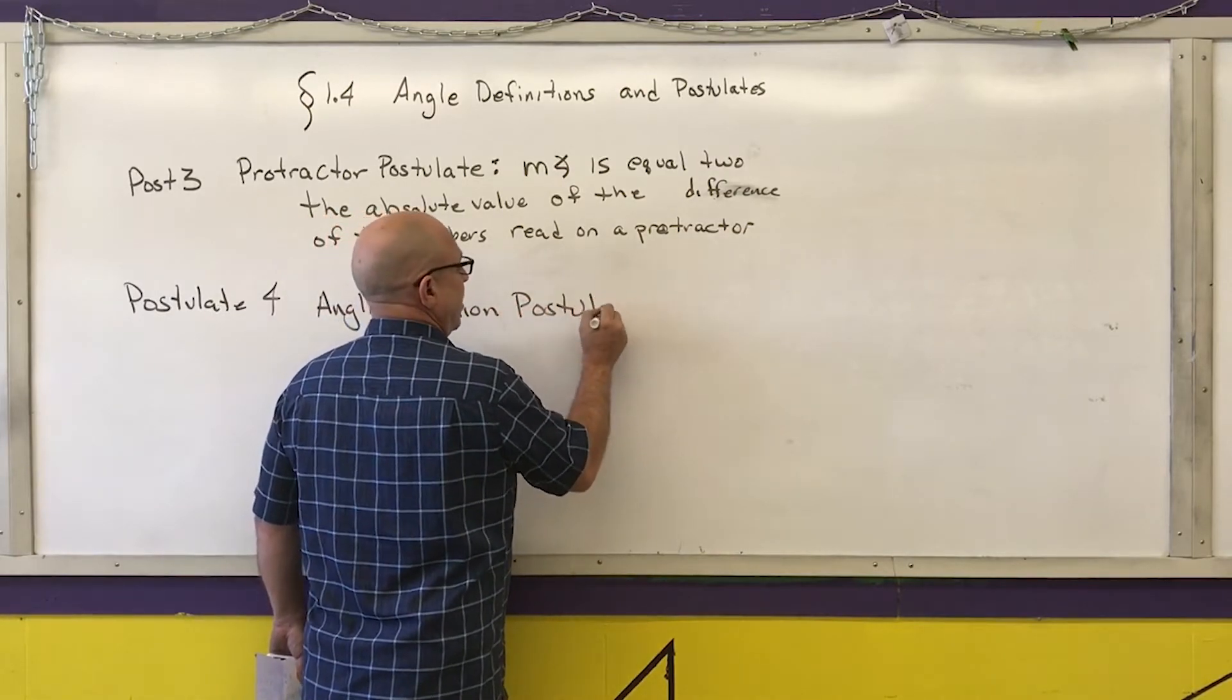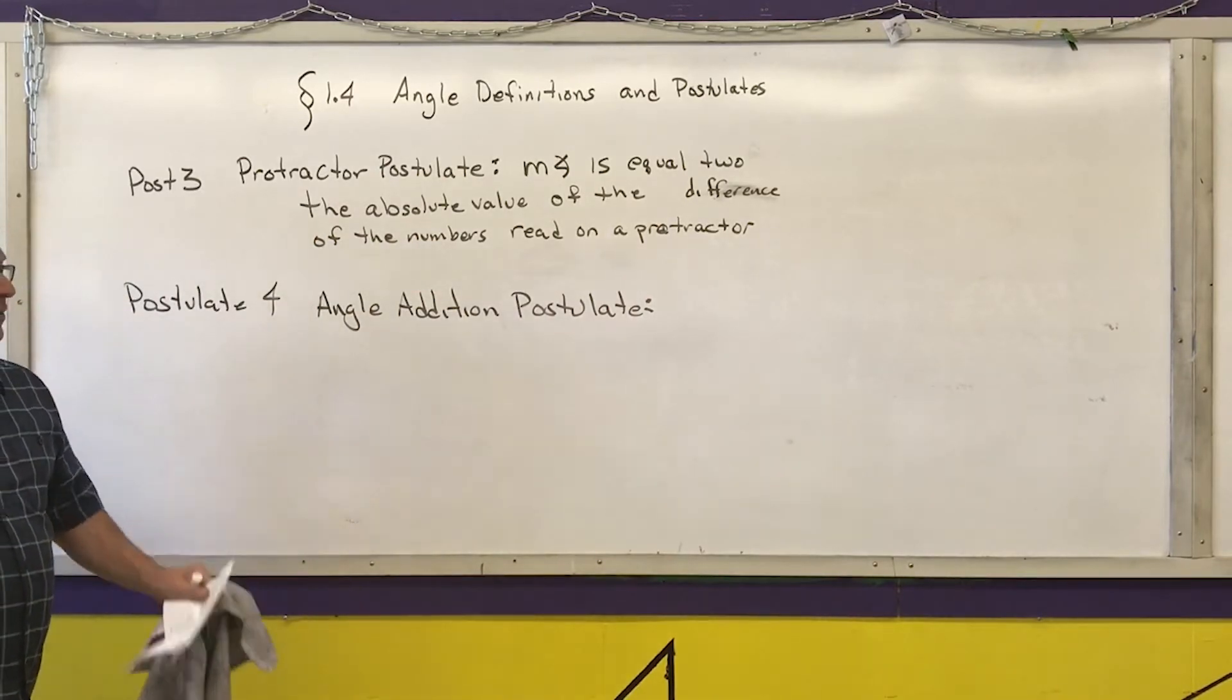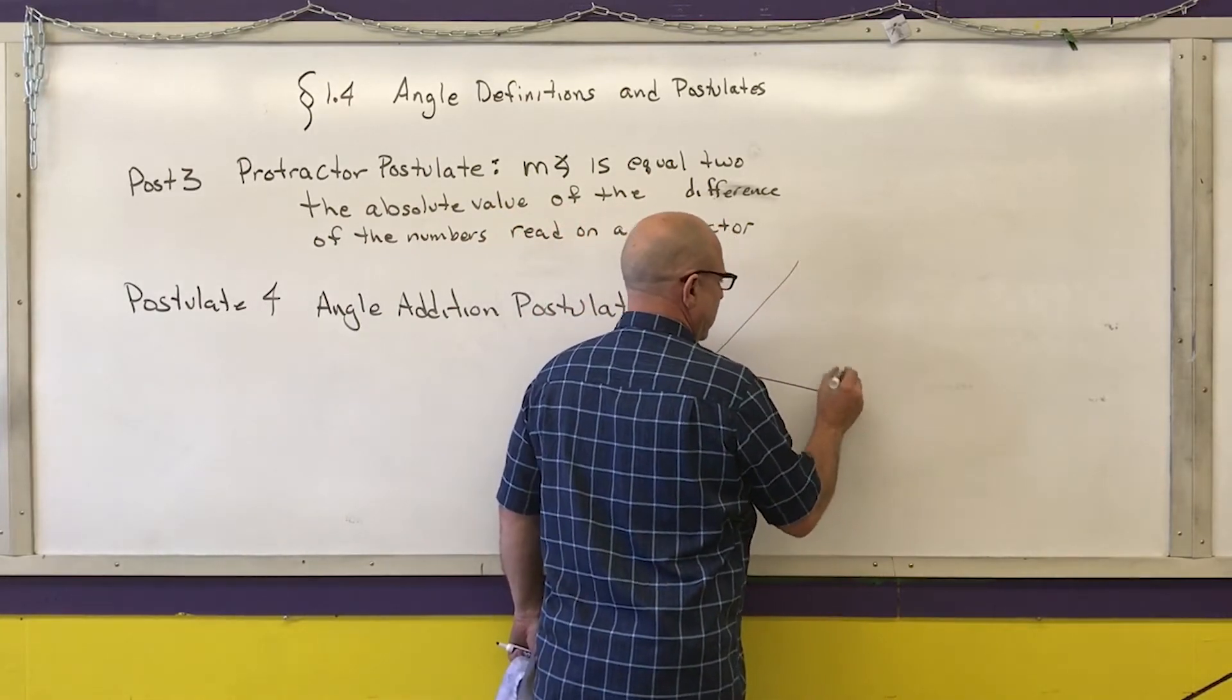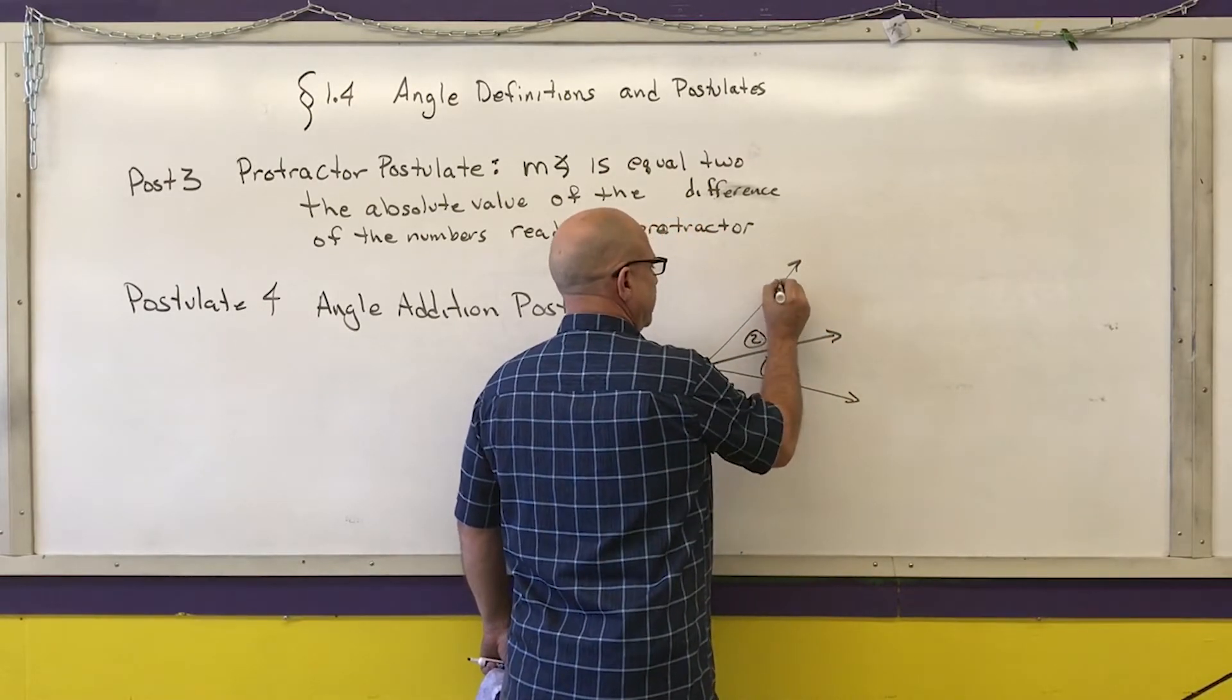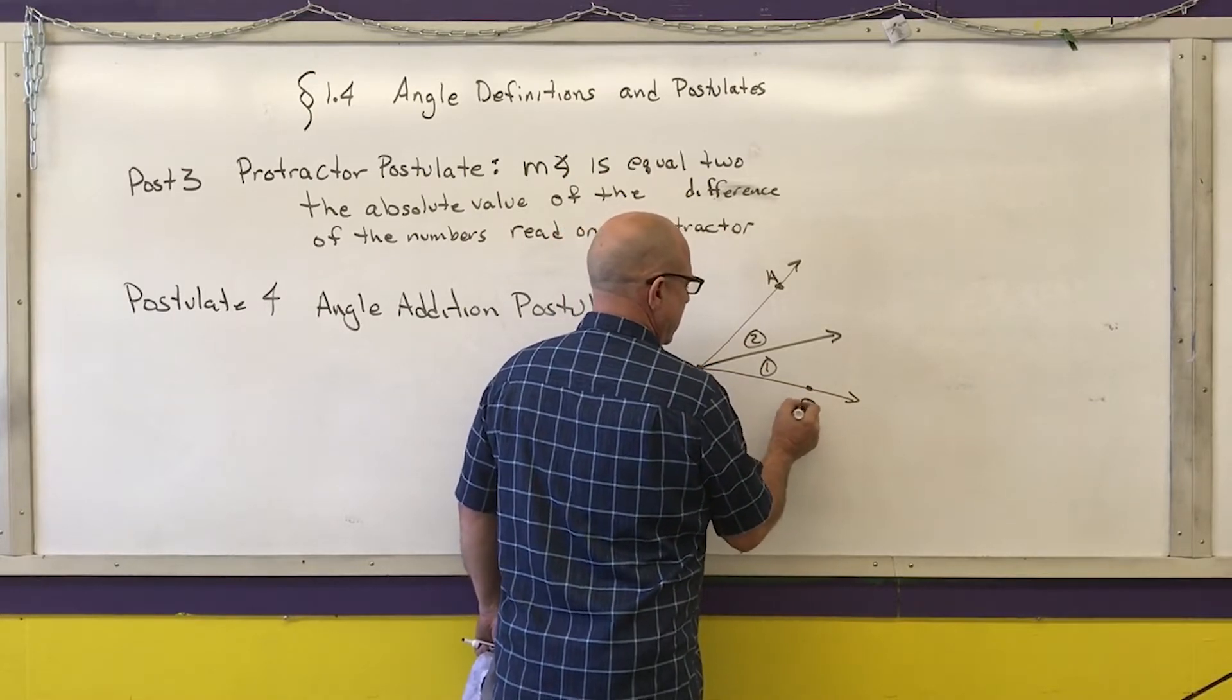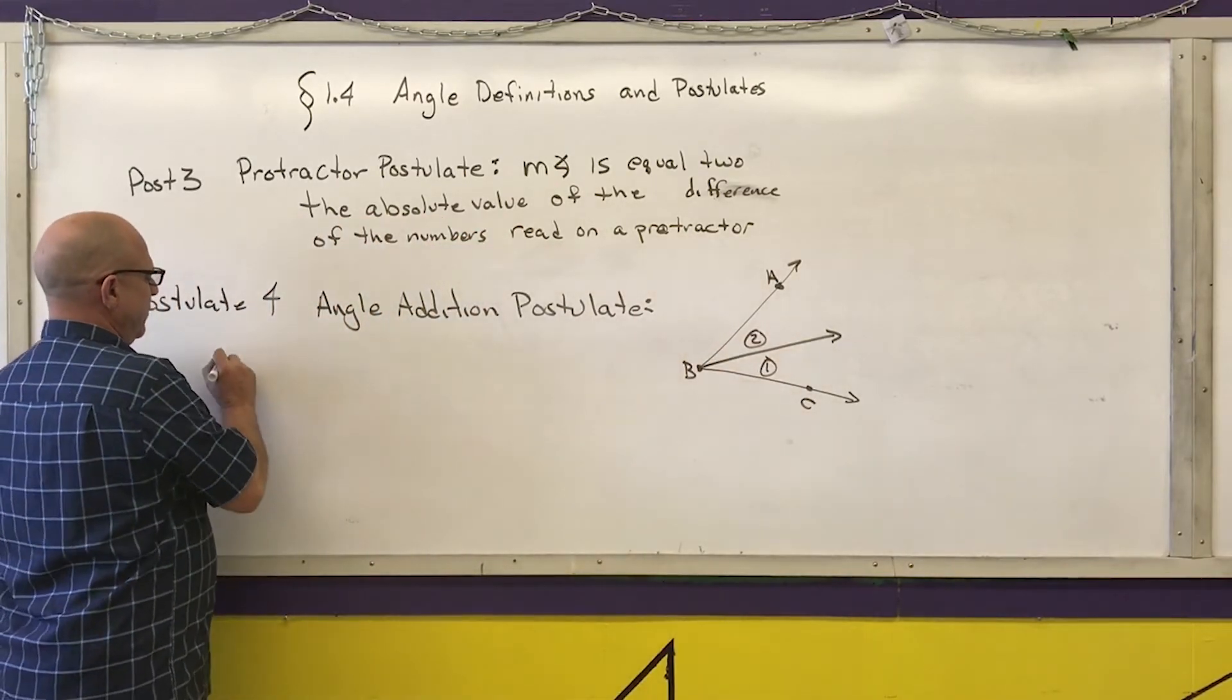Again make sure you copy all of the words out of the textbook and it's on page 25. And it says that if I have a big angle that is made up of two adjacent angles.